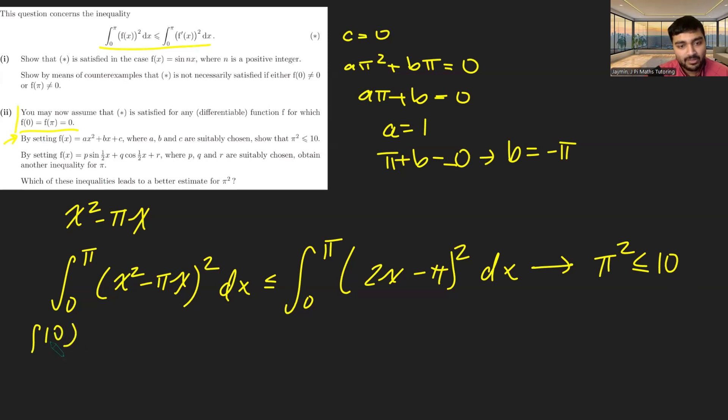So let's plug in 0 for this. So f(0), that would just be p·sin(0), which is 0, plus q·cos(0), which is 1. So we get q + r has to equal 0. And then if we plug in π, we're going to get something similar, but we're going to get p + r = 0.